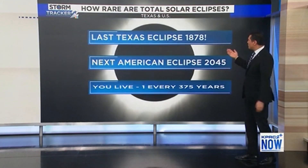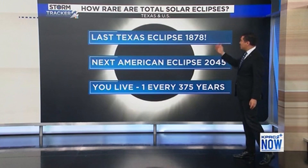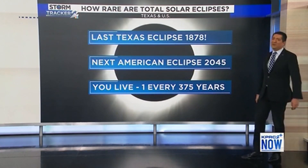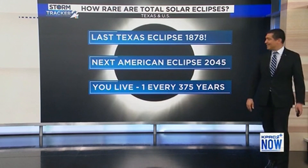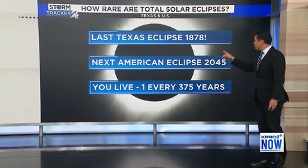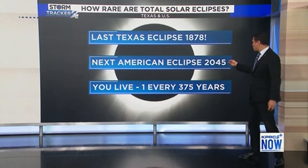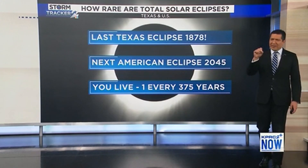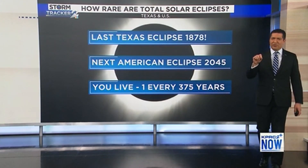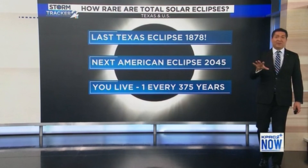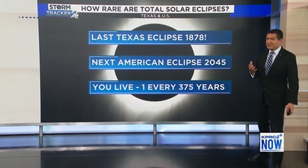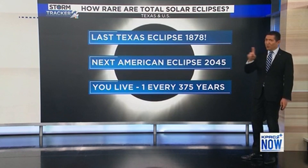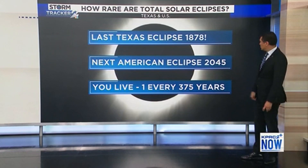What's rare about this is that the last time the state of Texas got a total solar eclipse, you have to go back all the way to 1878. The next great American eclipse is going to be in 2045. There's one in 2044, but that one barely hits the northern United States, so that's not much for us. The 2045 eclipse is the one that goes all the way from the west coast to the east coast.